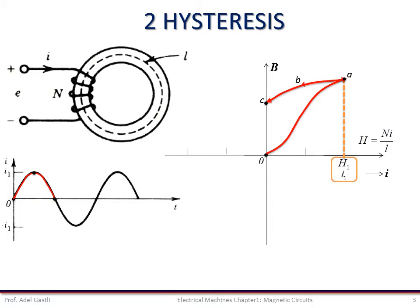If the magnetic flux intensity is now slowly decreased, the BH curve will follow a different path, such as ABC. When H is made 0, the core has retained a flux density BR, known as the residual flux density.